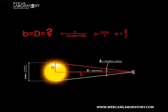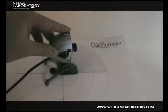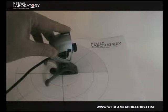Our task now is to measure the angular diameter of the Sun. In order to do this, first we have to know the total viewing angle of our camera. You can use the downloadable Protractor sheet that you can find on the Webcam Laboratory website.